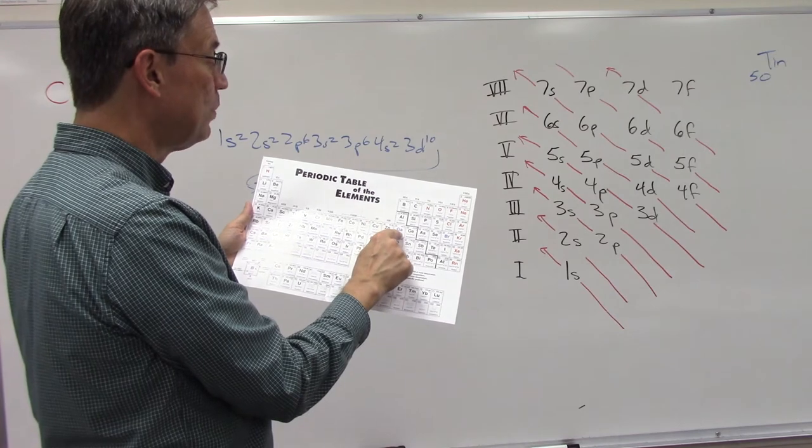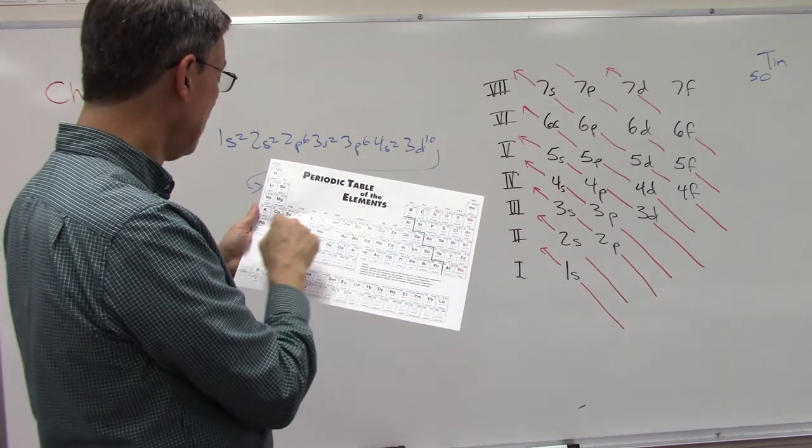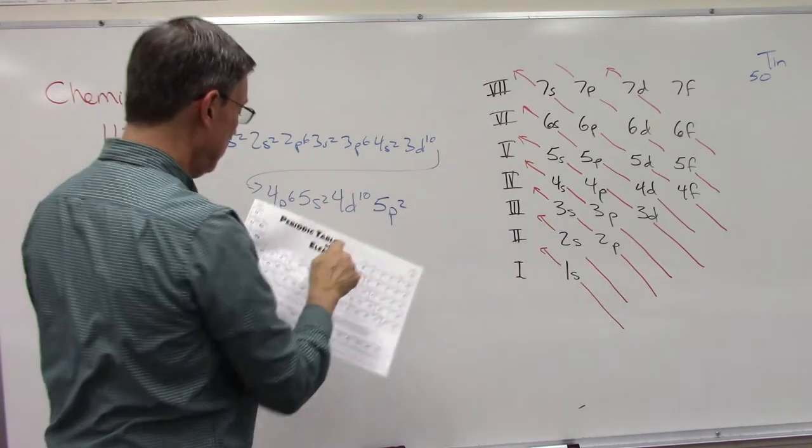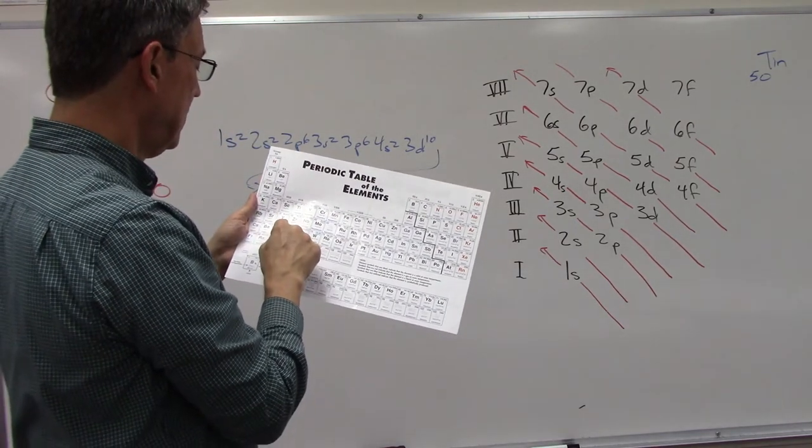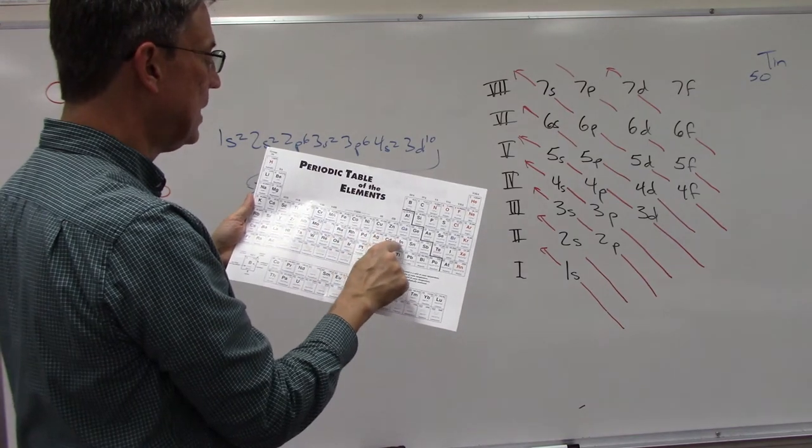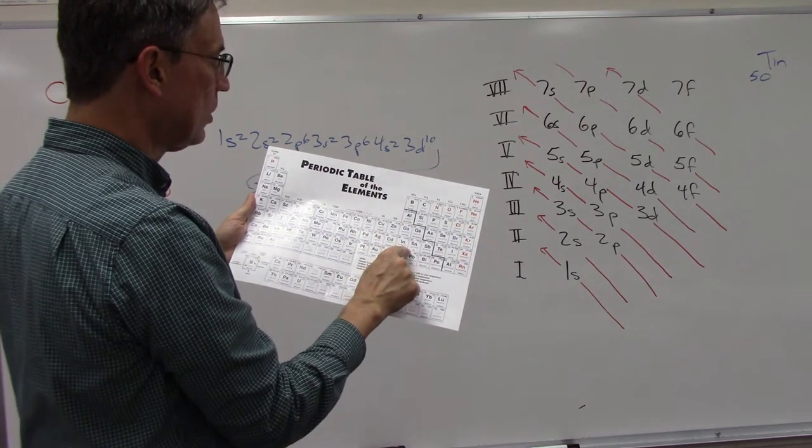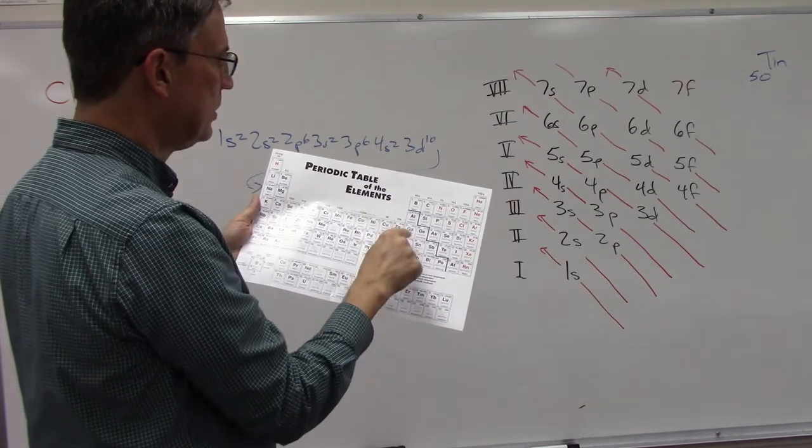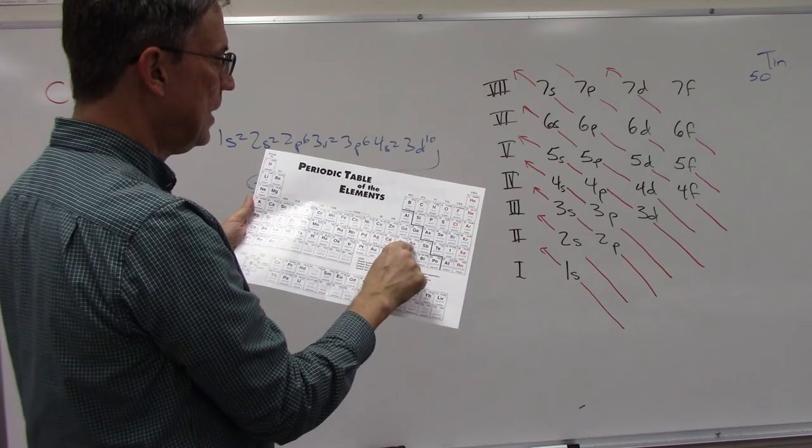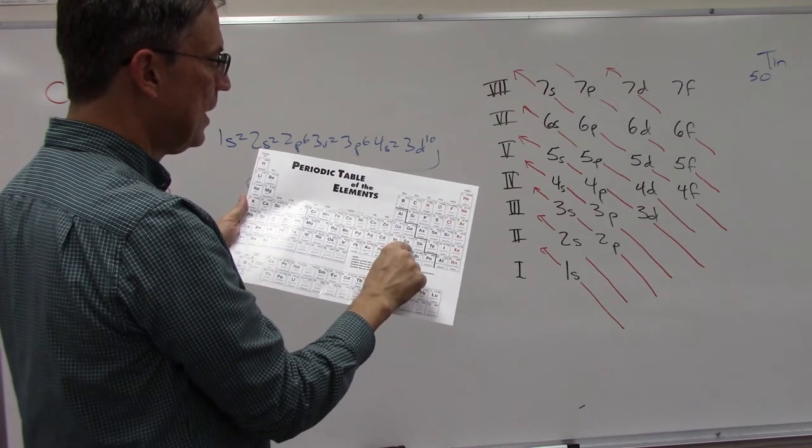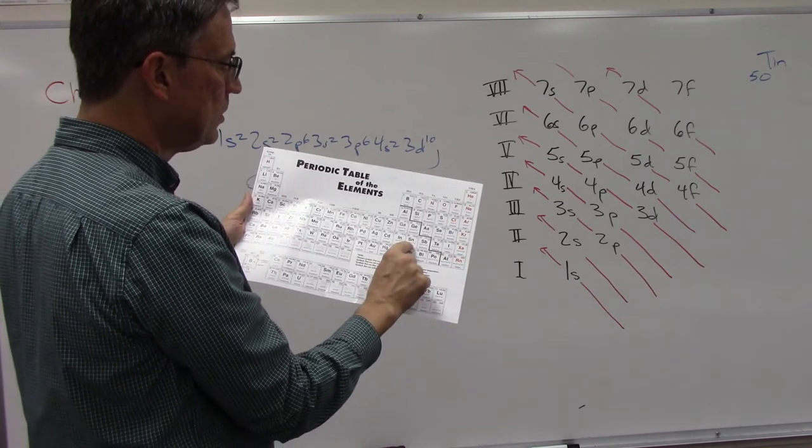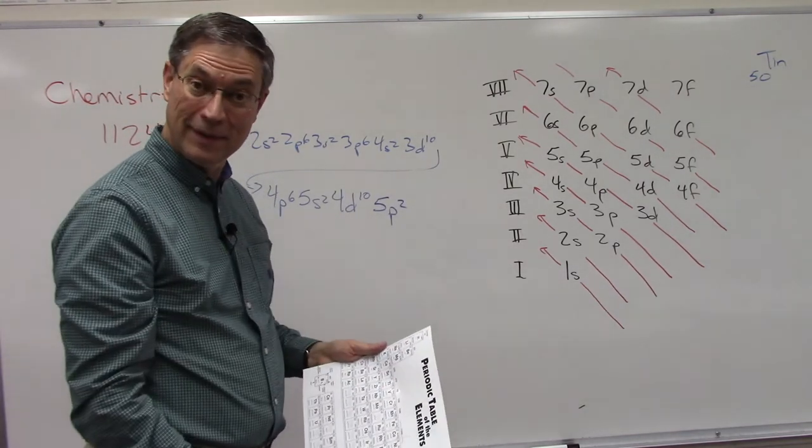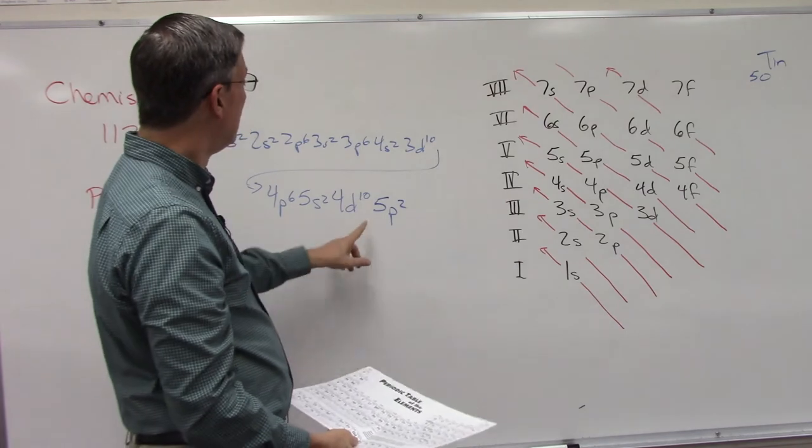And then we're filling in 4s2 and then 3d: 1, 2, 3, 5, 6, 7, 8, 9, 10. And now we go back to 4p: 1, 2, 3, 4, 5, 6. 5s: 1, 2. 4d is 1, 2, 3, 4, 5, 6, 7, 8, 9, 10. And then look, right here's tin, sn. I wrote the word tin but tin is sn and it's element 50. And look right there is the configuration 4d10, 5p2. Isn't that cool?